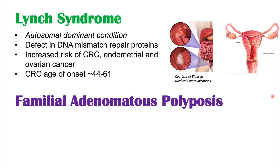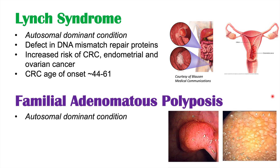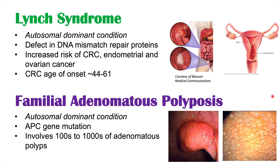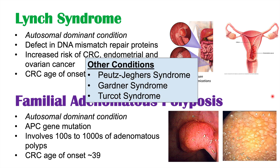The other important genetic condition is familial adenomatous polyposis (FAP), which increases the risk of colorectal cancer to essentially 100%. This too is an autosomal dominant condition due to a mutation in the APC gene, involving hundreds to thousands of adenomatous polyps, oftentimes by age 20, with an age of onset of colorectal cancer often around 39. These two conditions account for about 5% of all colorectal cancer cases. Other syndromes include Peutz-Jeghers syndrome, Gardner syndrome, and Turcot syndrome.